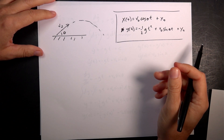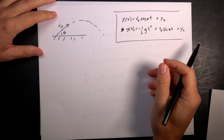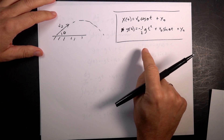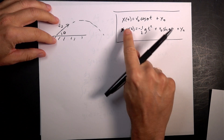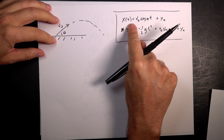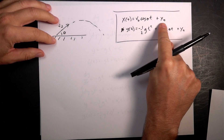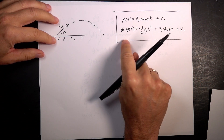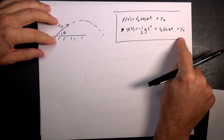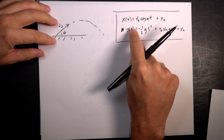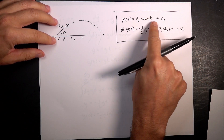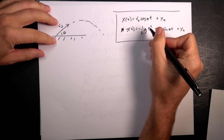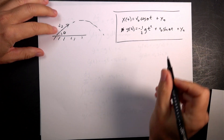One of the important things about projectile motion is that in the x equation there are no y's, and in the y equation there are no x's. So these two are independent motions, except that they both share the same time.